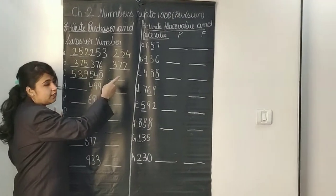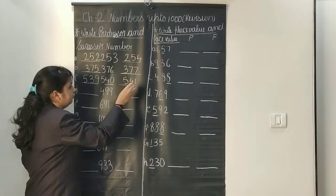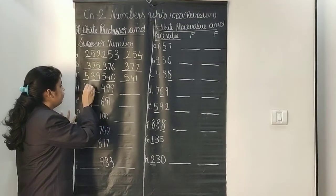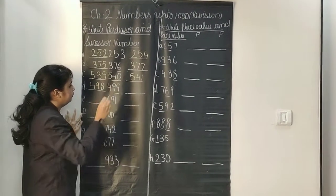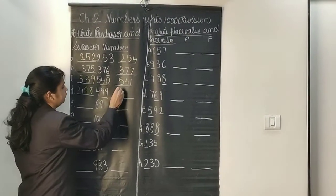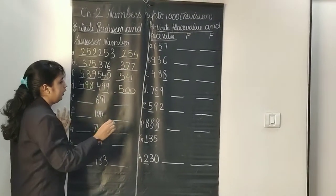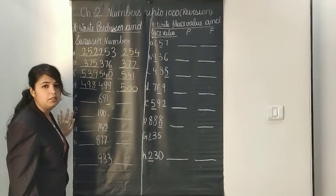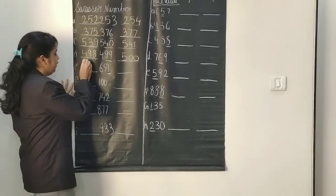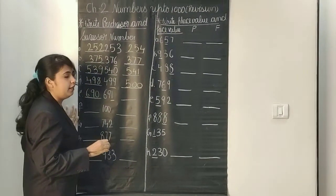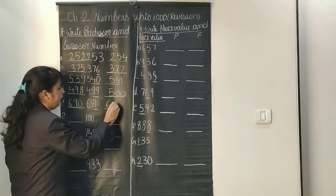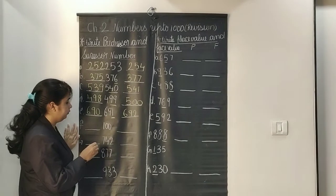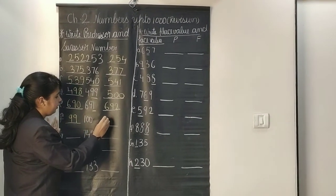The successor of 540 is 541. Next, 499 — the predecessor of 499 is 498 and the successor of 499 is 500. Now 691 — the before number of 1 is 0, so the predecessor is 690 and the successor of 691 is 692. Next, 100 — the predecessor of 100 is 99 and the successor is 101.